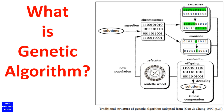A new generation is formed by: a) selecting, according to the fitness values, some of the parents and offspring, and b) rejecting others, so as to keep the population size constant. Fitter chromosomes have higher probabilities of being selected. After several generations, the algorithm converges to the best chromosome, which hopefully represents the optimal or sub-optimal solution to the problem.